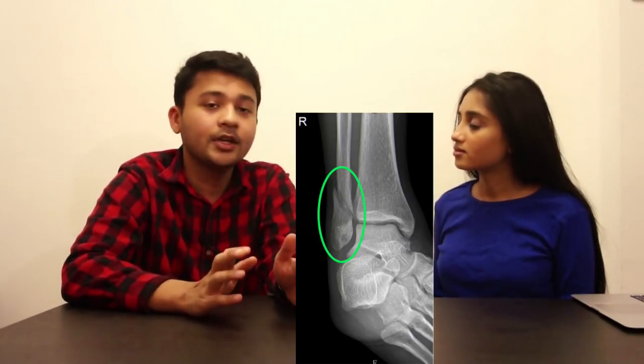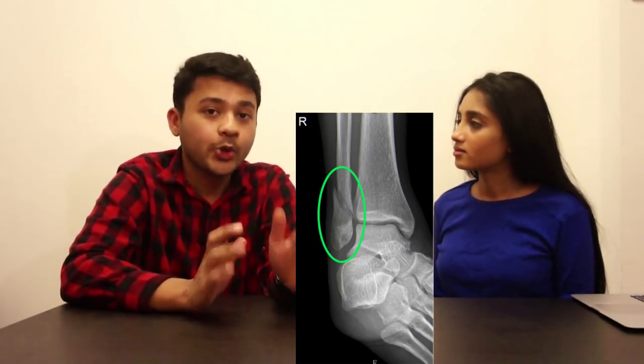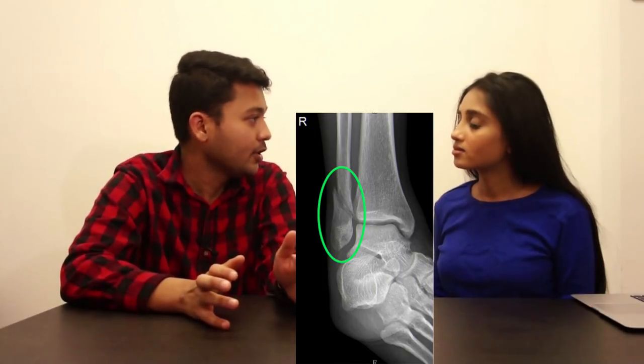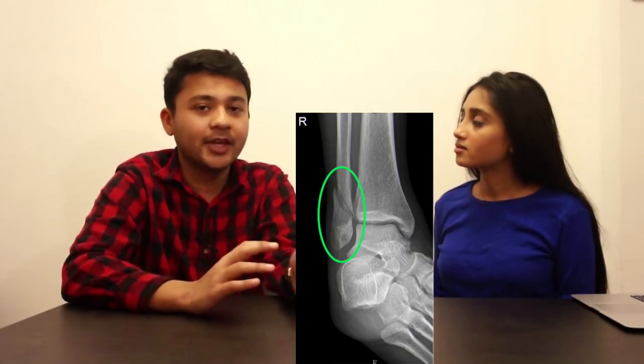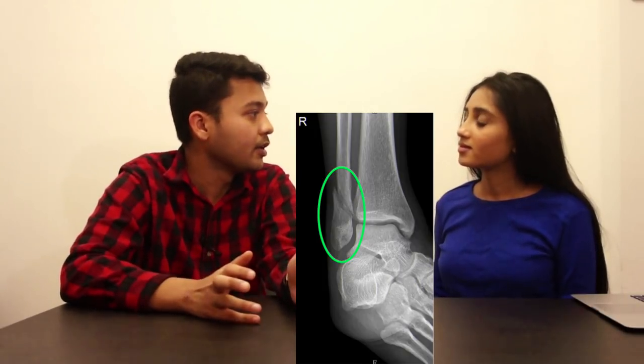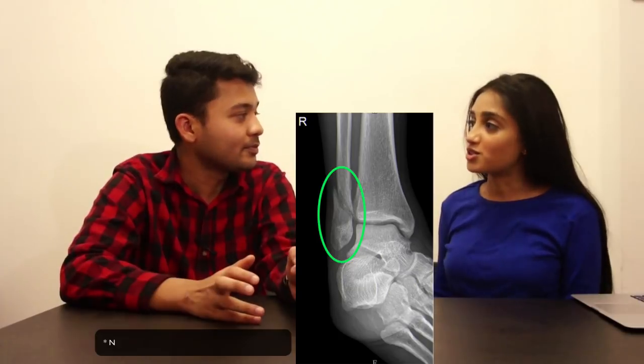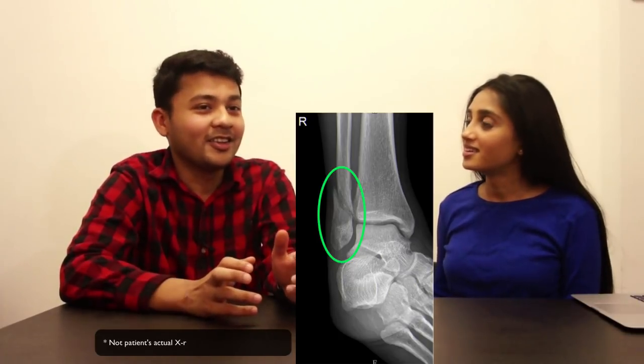With any ankle sprain or ankle injury, you want to get the ankle stress view to confirm the deltoid ligament is intact. It's the strongest ligament in the ankle and determines whether the ankle is stable or unstable. We got the x-rays, and for this patient they show a right closed transverse distal fibula fracture, classification Weber B.